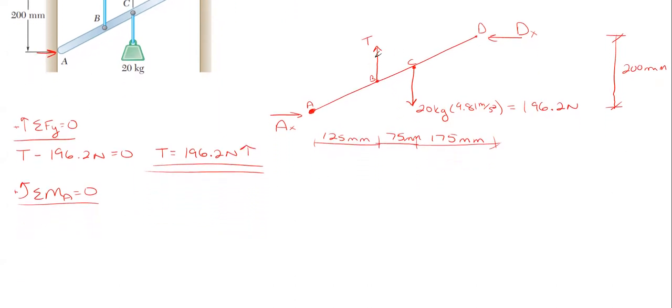Let's start with our tension force. It will be rotating counterclockwise about A, so positive 196.2 newtons times its perpendicular distance, which is 125 millimeters to get it over to A. Then our next force will be the other 196.2 newtons times its perpendicular distance to A, which is 200 millimeters.